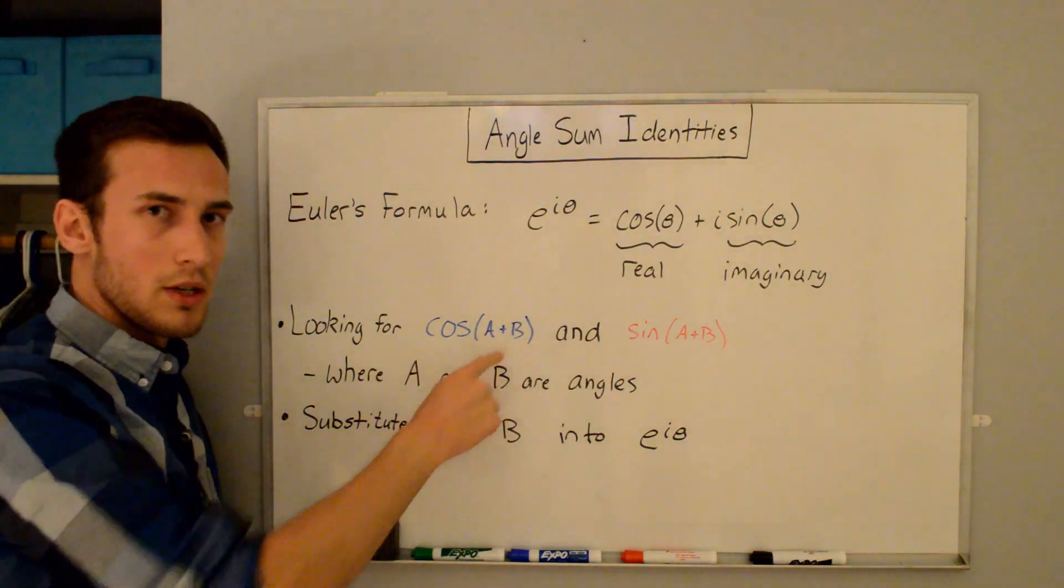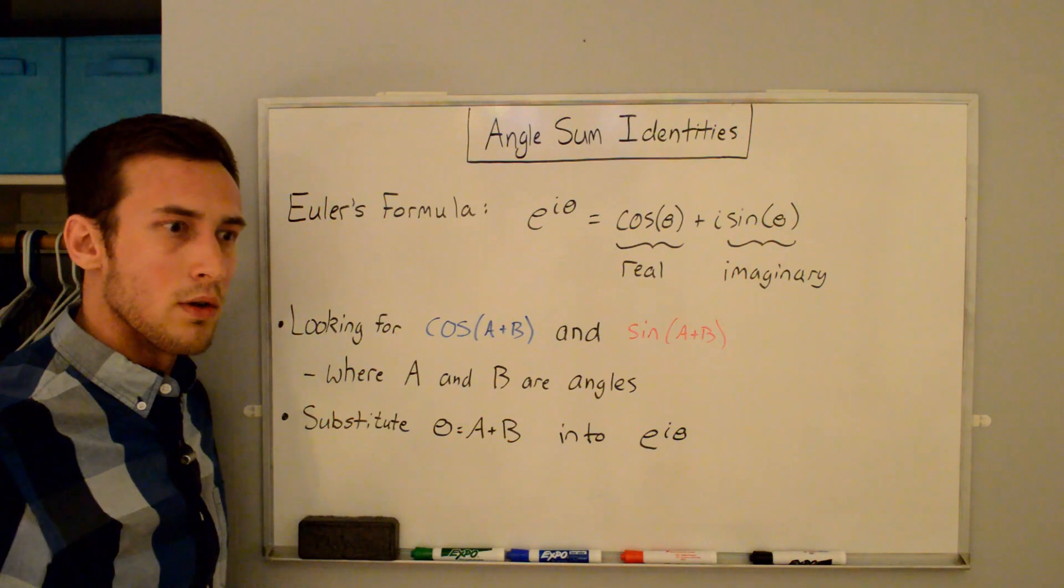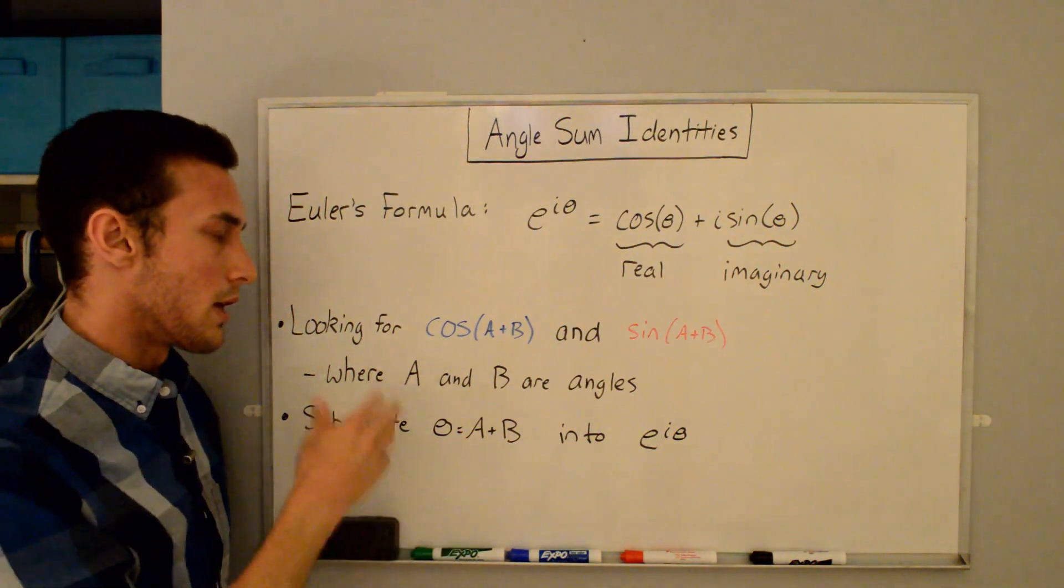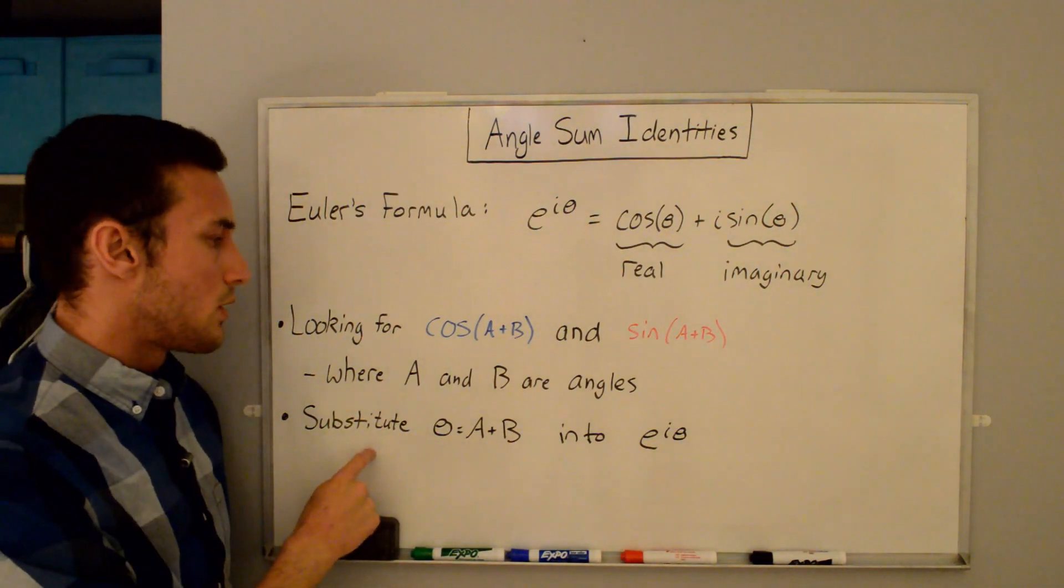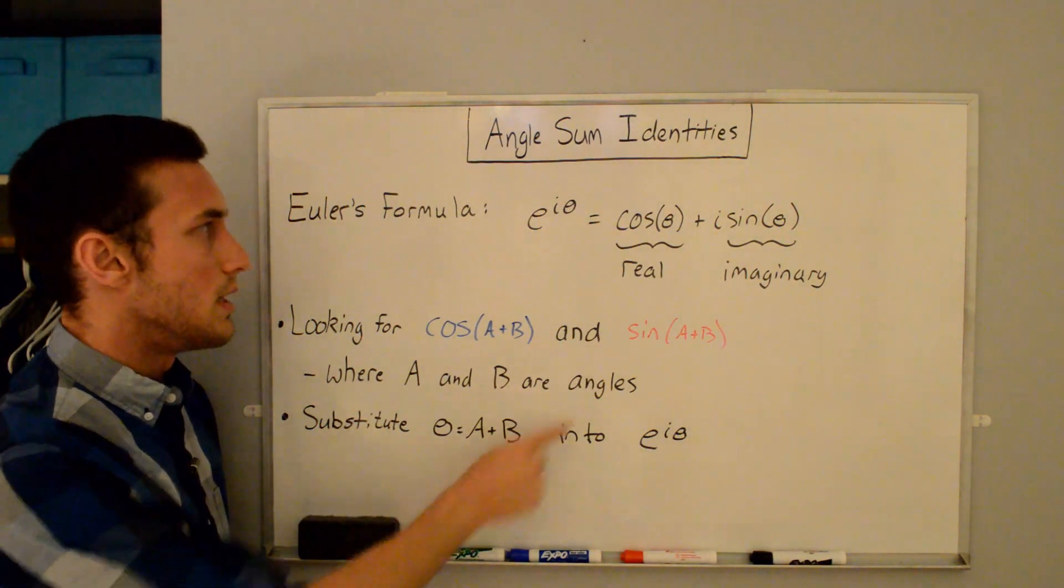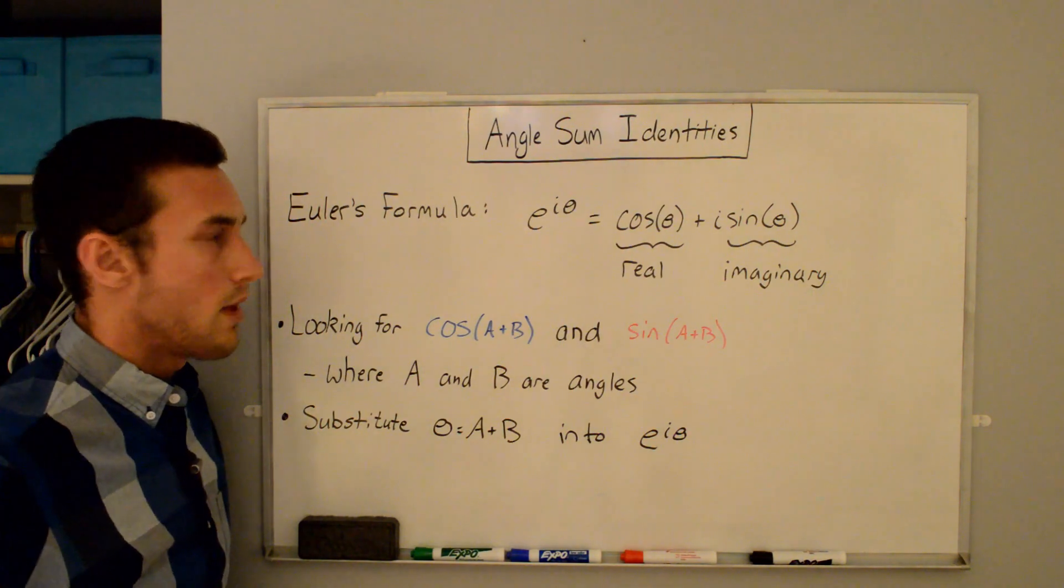Where A and B are angles, you might see alpha or beta used in other proofs, but it doesn't really matter. I'm just calling it A+B because it's easy to write. And the way that we're going to do this is we're going to substitute in θ = A+B into e^(iθ).